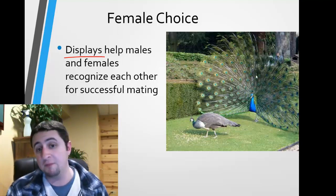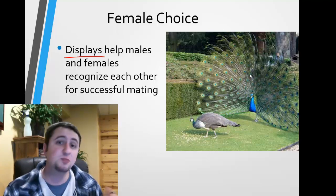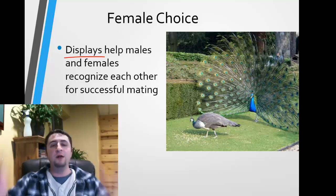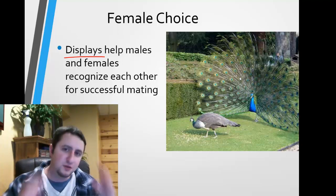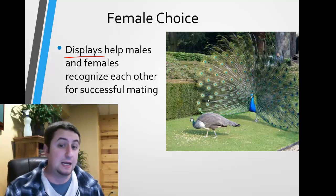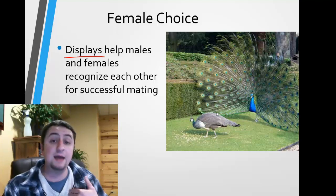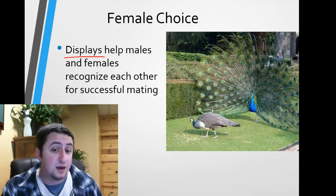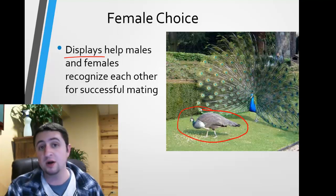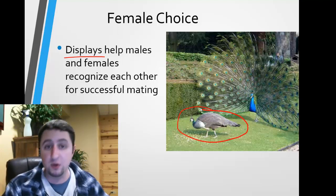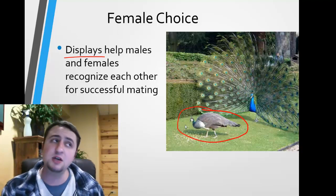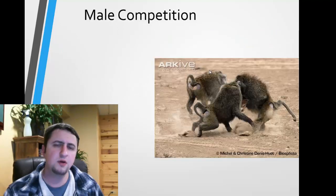If you look at this male here, he is displaying himself. When I look at a male peacock, I think wow, that is so awesome — look at all those feathers, that's absolutely amazing. But something in the female is telling her to either mate with him or pass him up and try to choose a different mate. So females actually have a choice on who they want to mate with.